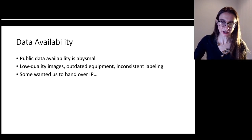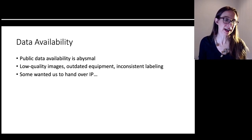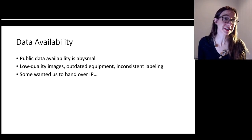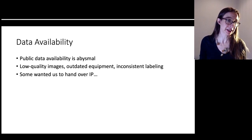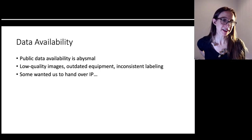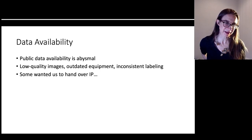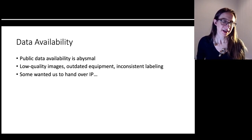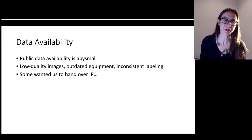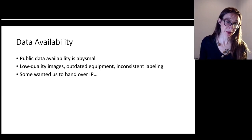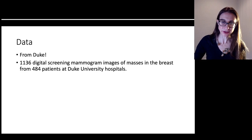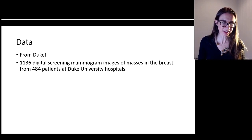A lot of difficulties occur because of lack of data — this causes a problem for any application of interpretable neural networks. Public data availability is very poor; some public data is low quality made with outdated equipment and uses inconsistent labeling. One well-known mammography dataset wanted us to hand over our IP before we even started using the data, so we said no. Luckily we got data from Duke — Dr. Lo located a data source — though we had to use inside connections to get it.